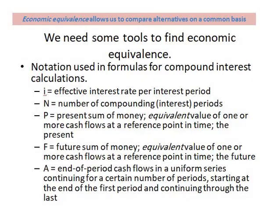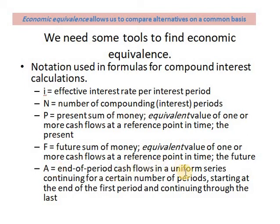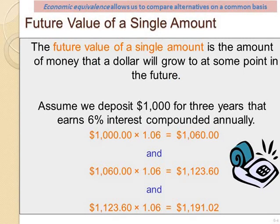In order to do that, we have to begin with the notations we use. Small i represents the effective interest rate per period, and n is the number of compounding or interest periods. P is the present value of money — the equivalent value in the present. F is the future equivalent value. A represents the annuity or uniform series of payments occurring every period. These are the notations we will be using.